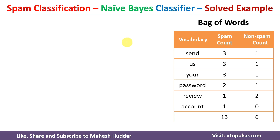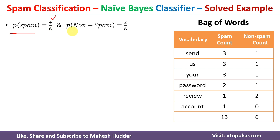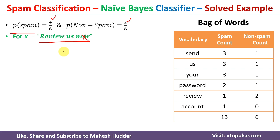Now we can apply the Naive Bayes classifier. First, we calculate the class probabilities: probability of spam equals 4/6 since 4 out of 6 documents are spam, and probability of non-spam equals 2/6. For the first new example x = 'review us now', the word 'now' is not present in the vocabulary, so we remove it and consider only 'review' and 'us'. We need to calculate probability of spam given x and probability of non-spam given x.